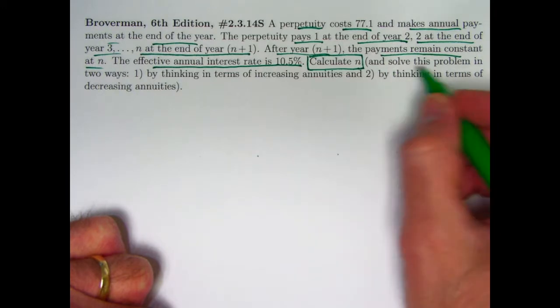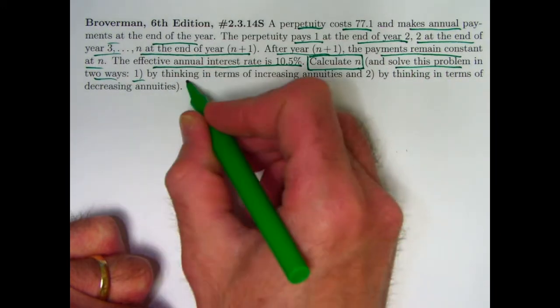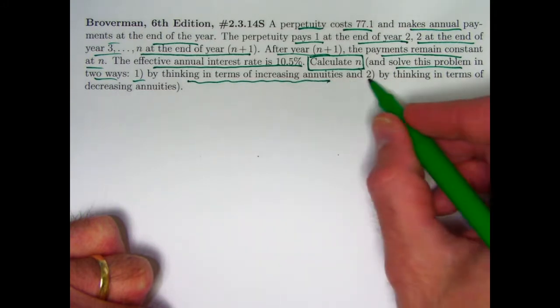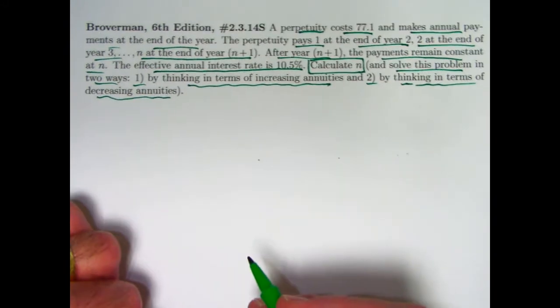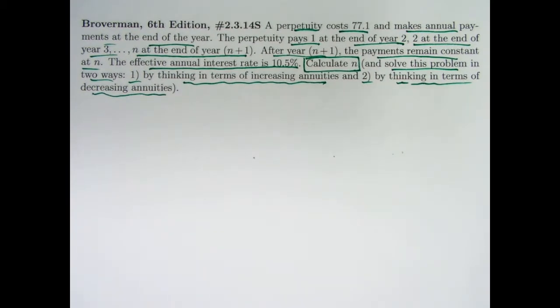That's where the book's directions end. I add on these extra directions here. Let's solve this problem in two ways. One, by thinking in terms of increasing annuities. Two, by thinking in terms of decreasing annuities, and we will see that the second way is definitely the quicker, easier way.